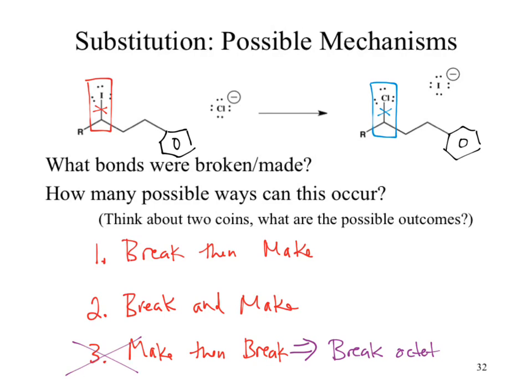So we can come up with some acronyms for this, which we will later update and make more appropriate. For those that stayed in the Monday lab, we came up with some fun little acronyms. In this case, we broke and made — so we have the BAM mechanism. In the other case, we broke then made — we have BTM, which looked like 'bite me' to me. So we have the bite me mechanism and the BAM mechanism, acknowledging the steps happening within those.